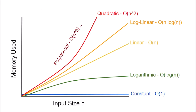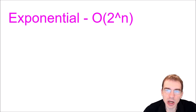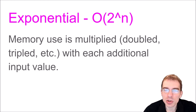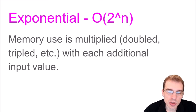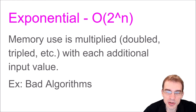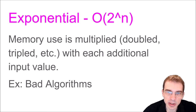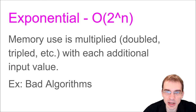Even worse than polynomials are functions that require an exponential amount of memory. A function with exponential space complexity, also known as O(2^n), is one where the memory use is doubled, tripled, etc. with each additional input value. So if it's 2^n, for each additional input value the amount of memory needed would double. This isn't something that's actually going to be very common, simply because that sort of exponential growth of memory means you're basically just going to run out of memory with even fairly small inputs, and your computer or programming environment is going to crash. So if you're looking at something where your memory complexity is going to be exponential, you probably should try something else.